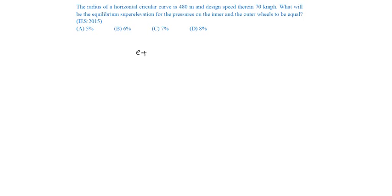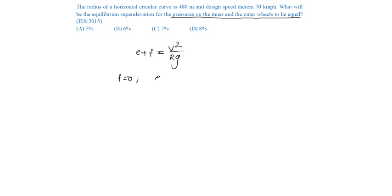E plus F is equal to V square by Rg. In order to have pressure on the inner and outer wheel to be equal, friction should be equal to 0. So E is equal to V square by Rg.